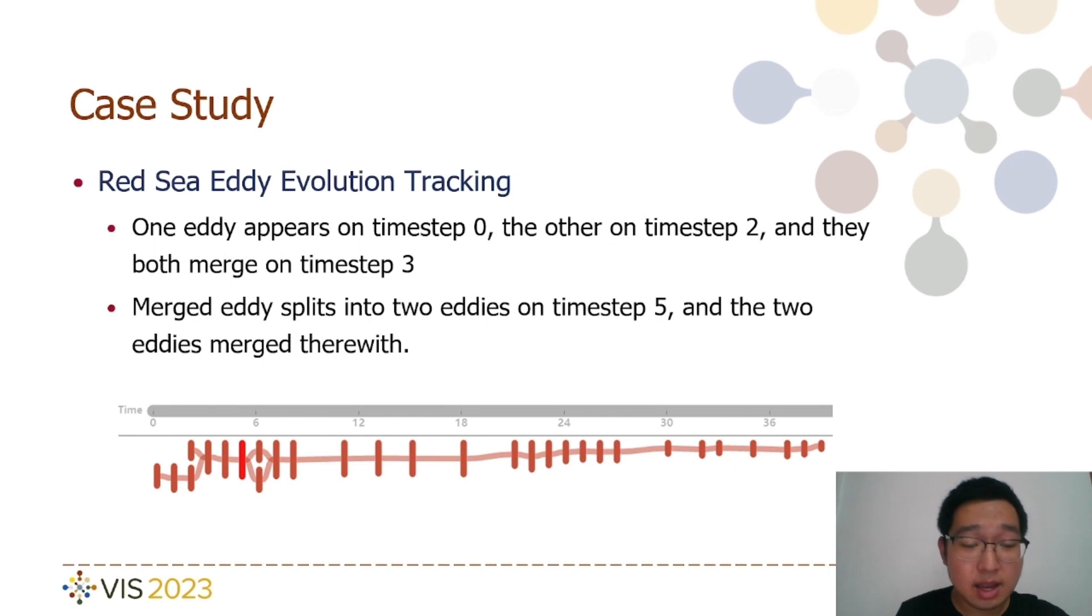Interestingly, these two eddies merged once again into a single eddy on the very next timestamp. Following these events, the eddy continued its evolution without any further splitting or merging with other eddies. The eddy persisted until timestamp 39, at which point it disappeared from the dataset. This detailed tracking provides valuable insights into the dynamic behavior of these eddies within the Red Sea dataset.